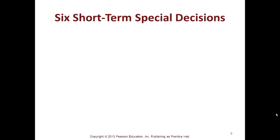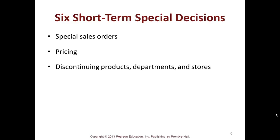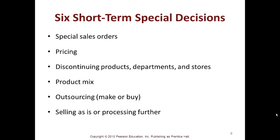Six short-term special decisions: special sales order pricing, discontinuing products, departments and stores, product mix, outsourcing, and selling as is or processing further. These are what we would call special decisions.